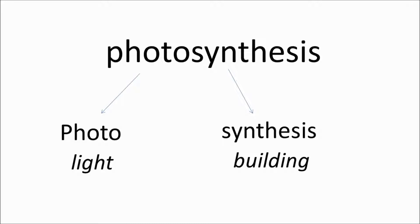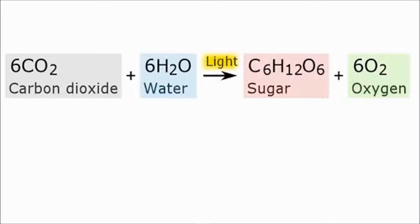Let's have a look at the reaction. This balanced symbol equation shows that plants need carbon dioxide and water, and they produce glucose and oxygen. You might have noticed that if you switch the reactants and products around, you have the respiration equation.